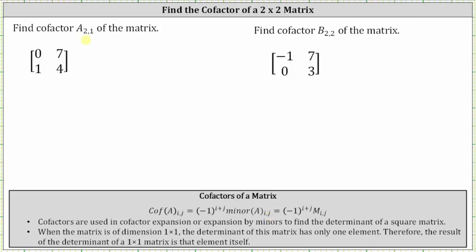To begin, we're asked to find the cofactor of a sub two comma one. We begin by determining the element in row two column one, which is the one. To find the minor, we will need to eliminate row two and column one from the given matrix A.